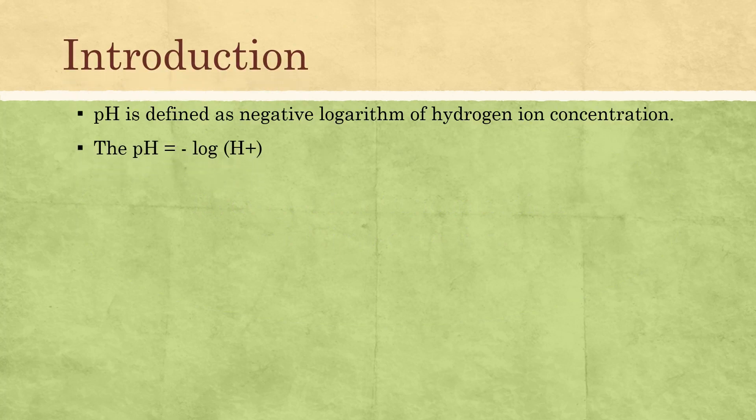Let's start with the introduction. pH is defined as the negative logarithm of Hydrogen-Ion Concentration. So pH is nothing but the negative logarithmic value of Hydrogen-Ion Concentration. Therefore, pH = −log[H⁺], which is equal to log(1 / [H⁺]).